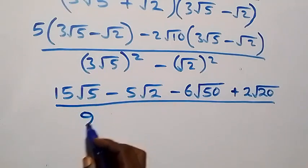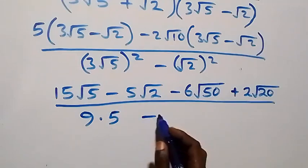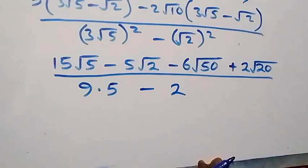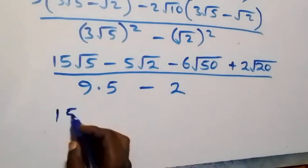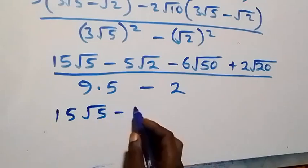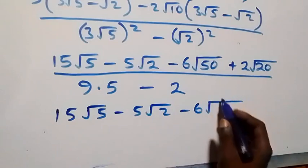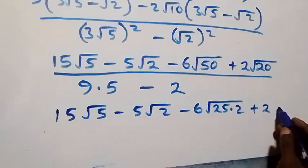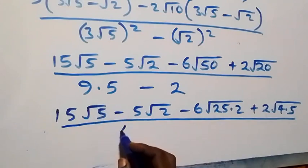The denominator: three squared is 9, times (root five) squared which is 5, giving 9 times 5 equals 45, then minus (root two) squared which is 2. So the denominator is 45 minus 2. Also, root 50 can be written as root(25 times 2), and root 20 can be written as root(4 times 5).